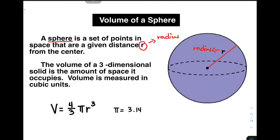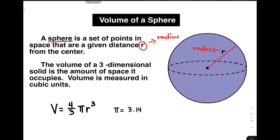With regards to the volume, the volume of a three-dimensional solid is the amount of space it occupies. Volume is measured in cubic units — you need to remember that. To calculate for the volume of a given sphere, we will be using this formula: Volume is equal to 4 over 3 times pi times r cubed, where pi is equal to 3.14.